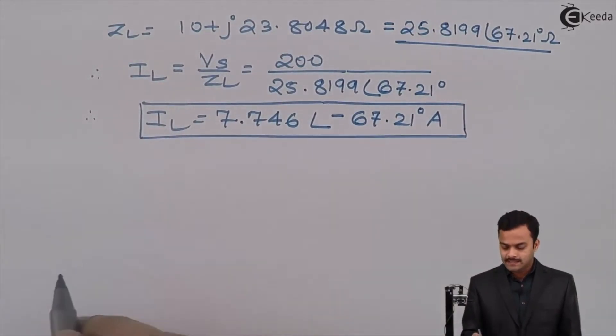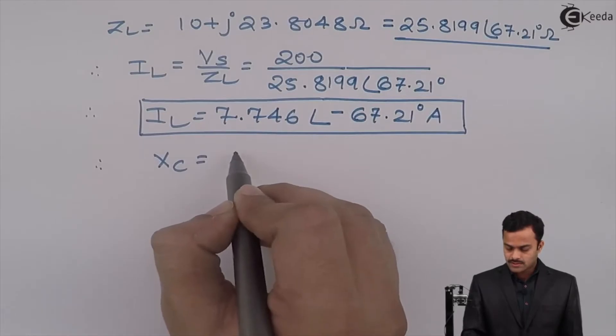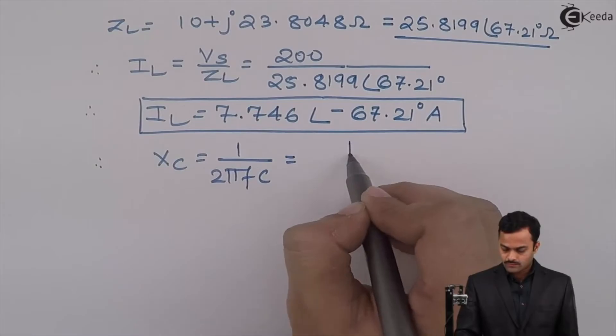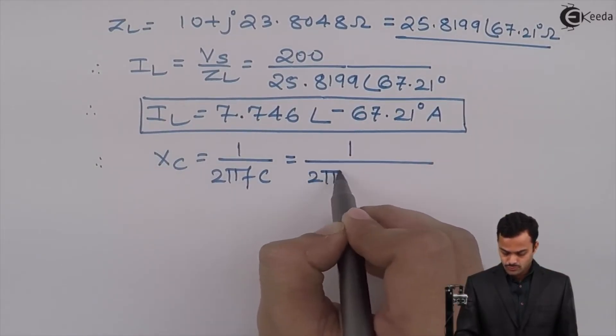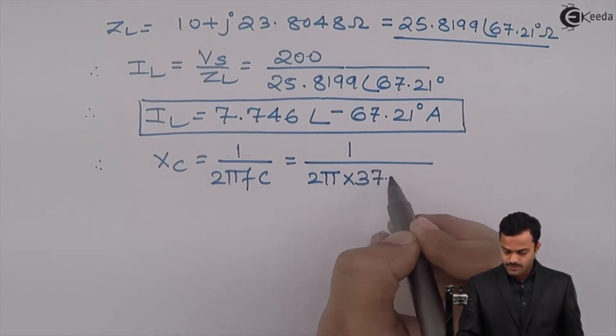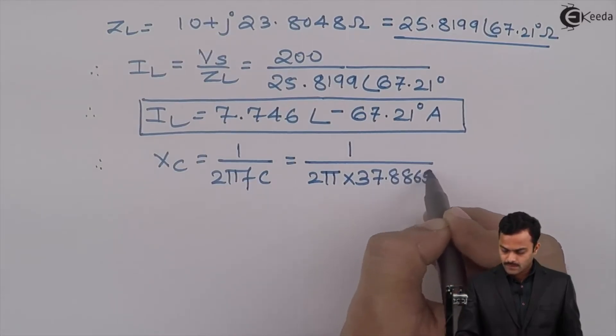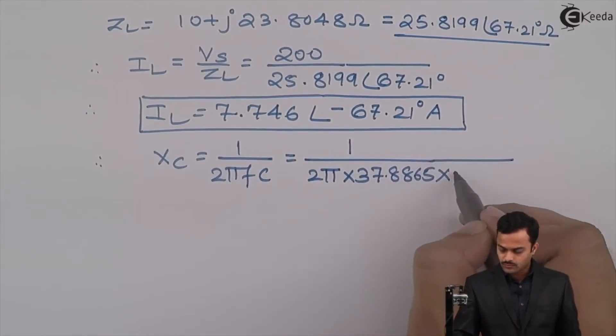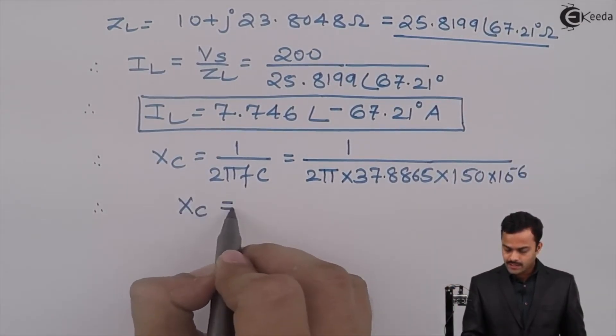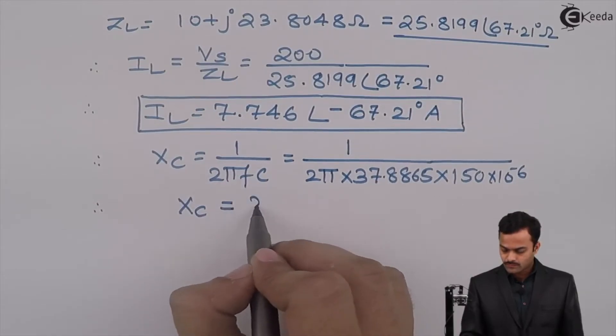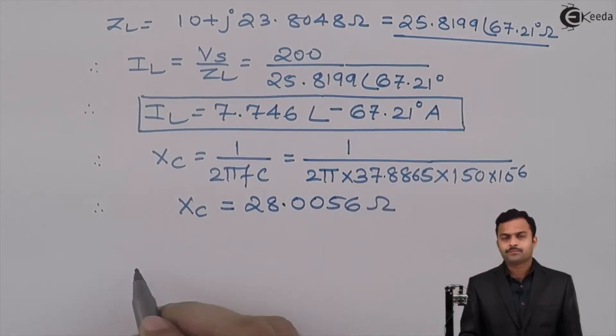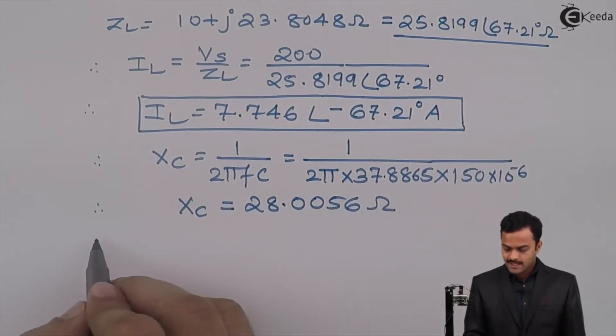Similarly I can get IC, but for that I should know what is XC. So that is equal to 1 upon 2π fC equal to 1 upon 2π multiplied by frequency which is 37.8865 into capacitor value 150 microfarad. So if you solve you will get XC equal to 28.0056 ohm.